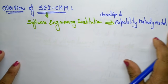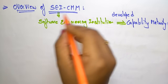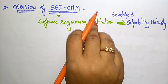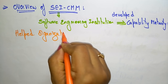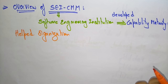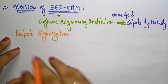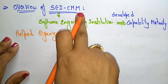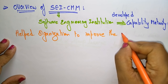So this SEI CMM helped organizations. The Software Engineering Institution Capability Maturity Model helped organizations to improve the quality of software they develop.